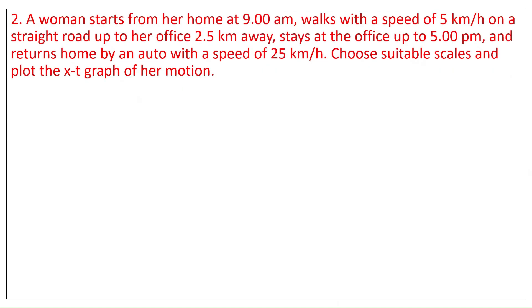Question 2. A woman starts from her home at 9 a.m., walks with a speed of 5 km per hour on a straight road up to her office 2.5 km away, stays at the office up to 5 p.m., and returns home by an auto with a speed of 25 km per hour. Choose suitable scales and plot the X-T graph of her motion.